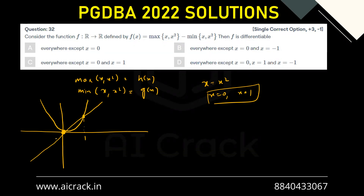From minus infinity to x = 0, we can clearly see that x² has the maximum value compared to y = x. So for x ≤ 0, h(x) = x².